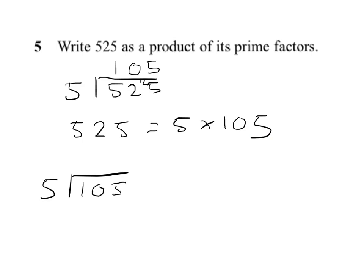Well, 5 doesn't go into 1, 5 goes into 10 twice, and 5 goes into 5 once. So, we can now say 525 equals 5 times 5 times 21.